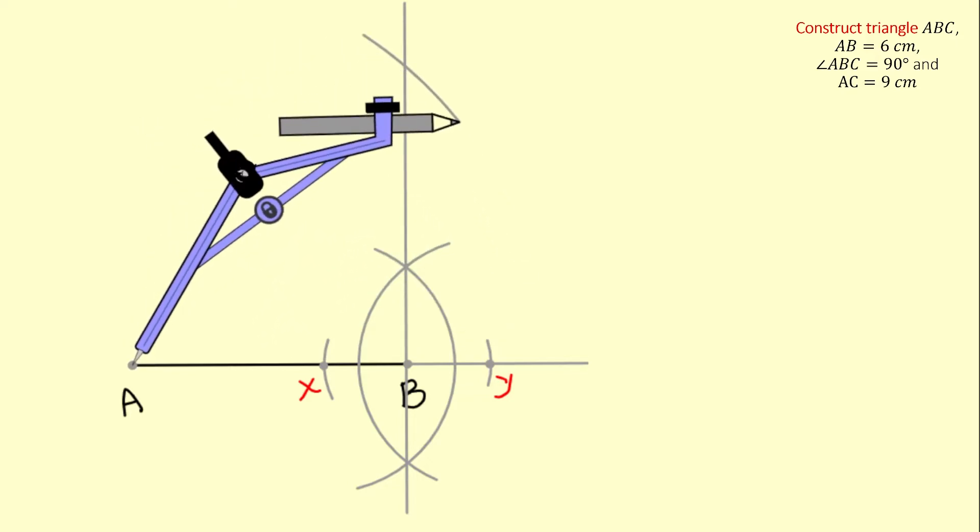Now this is point C. Now all I have to do is connect point A with B and C for my right angle triangle.